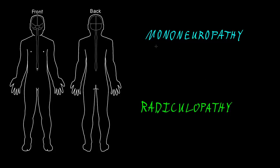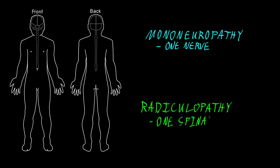Mononeuropathy is dysfunction of one nerve somewhere out in the periphery of the body, while we use the term radiculopathy for dysfunction of one spinal nerve, or its roots.